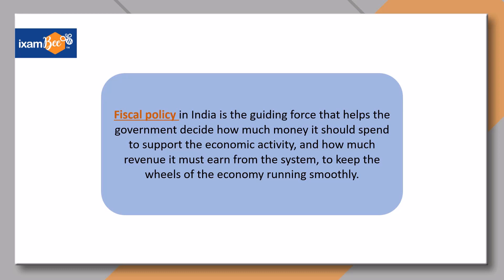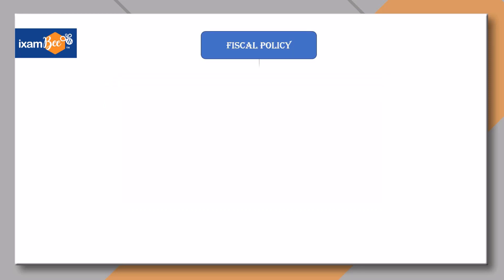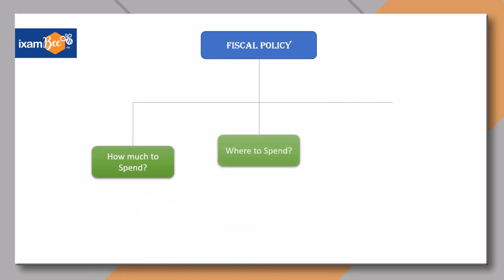Fiscal policy in India is the guiding force that helps the government decide how much money it should spend to support economic activity, and how much revenue it must earn from the system to keep the wheels of the economy running smoothly. The three major components of fiscal policy are: how much to spend, where to spend, and what would be the source of money.